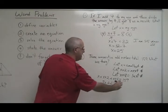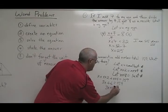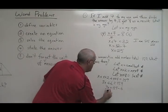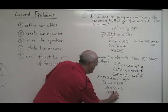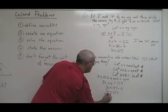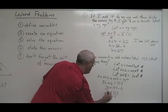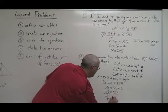Move the 6 to the other side. 3x equals 159 minus 6, which is equal to 153. Divide both sides by 3. And x equals 51.